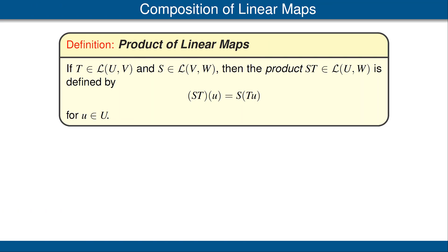Now we come to another important algebraic operation with linear maps, namely taking the product. For this, we need three vector spaces, which we'll call U, V, and W. If T is a linear map from U to V and S is a linear map from V to W, then the product ST will be a linear map from U to W that's defined simply as the composition of S and T. In other words, the product ST evaluated at u is equal to S(T(u)). You should verify that this is indeed a linear map.